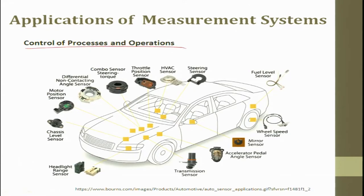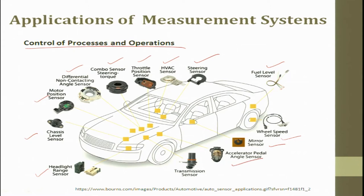When we talk about different control processes and operations in terms of automobiles, you can see headlights range, chassis level sensor, motor position sensor, differential non-contact angular sensor, combo sensor for steering, throttle position for fuel flow, HVAC sensor, steering sensor, fuel level sensor, wheel speed monitoring, mirror sensor, acceleration pedals, and transmission system. Today all these sensors are placed inside an automobile - these sensors first measure the required quantity and then try to control certain quantities to get the best mileage or a comfortable ride. This is control of process and operation.